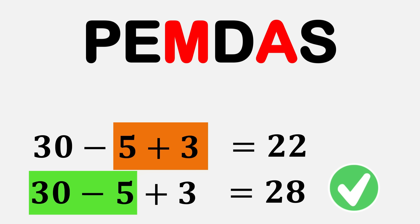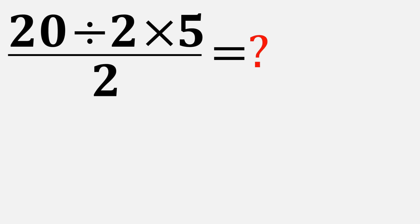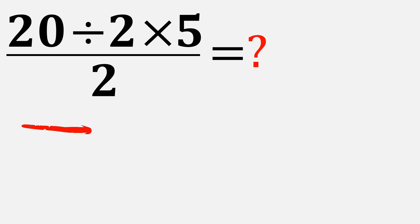Now let's use that idea to solve the problem correctly. According to the order of operations, we start from the left and look for any division or multiplication. The first operation from the left is 20 divided by 2, that gives us 10.